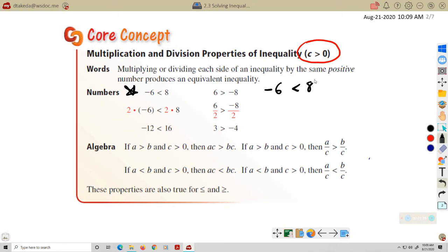This one here, I'll just kind of redo it over here. Negative 6 is less than 8, which is a true statement, of course, right? If I multiply both sides by a positive 2, my inequality still stays the same. In other words, the left side is still less than the right side. Negative 12 is less than 16. Still a true statement.